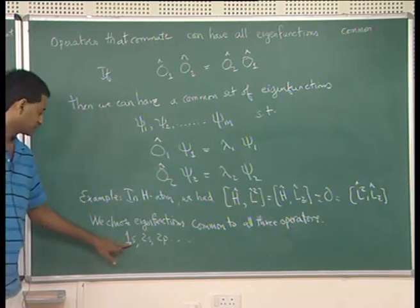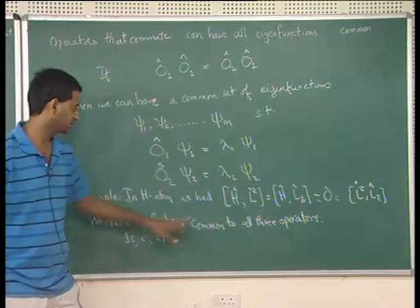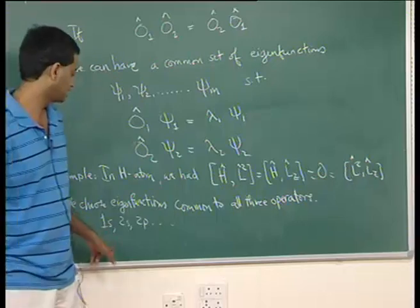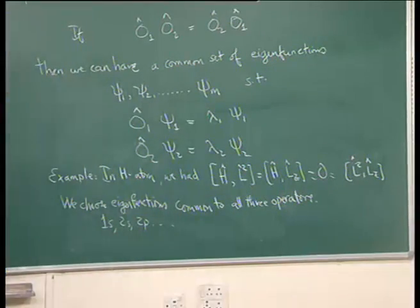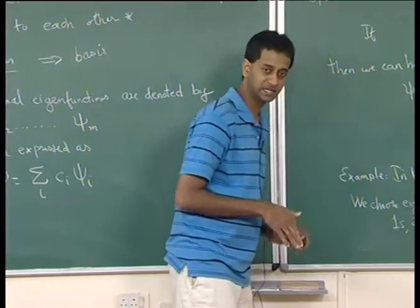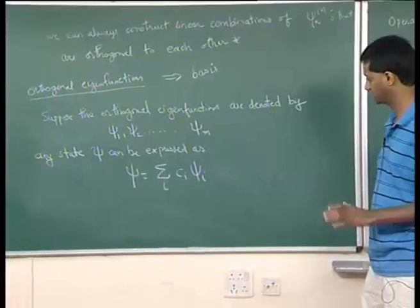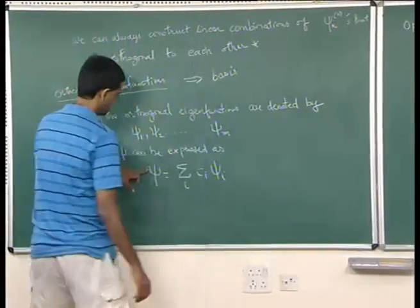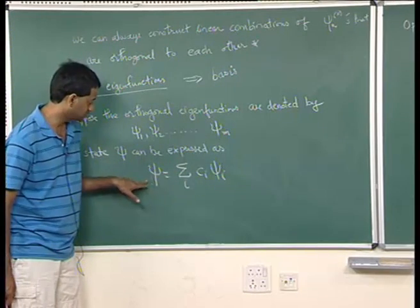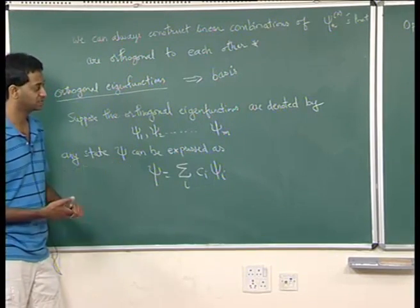For example, if you take 1s, you had a specific eigenvalue of energy, a specific eigenvalue of L², and an eigenvalue of L_z. So we can choose our eigenfunctions to be common eigenfunctions of all three operators. With this background we can start applying our ideas of symmetry in constructing wave functions — these linear combinations will be constructed using wave functions that obey certain symmetry properties.